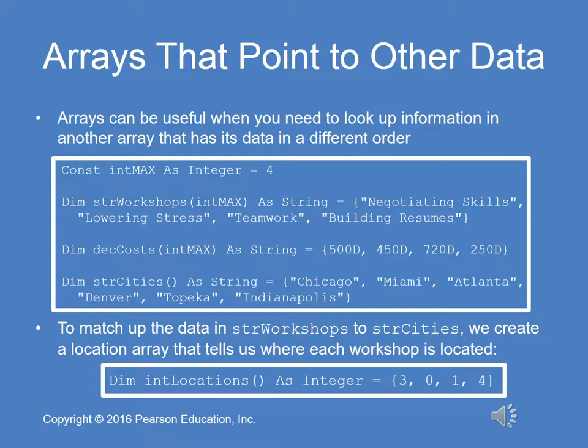Arrays can also be used when you need to look up information in another array that has its data in a different order. To match up the data in two arrays, we create a third location array that tells us where the data referenced in one array is associated to other data in a second array. In this particular example, we have an array called string workshops — names of workshops stored as strings — and then we have the cost of these workshops, and then we have the cities declared, not necessarily in the same order.